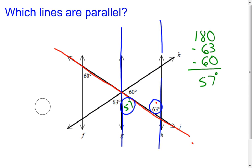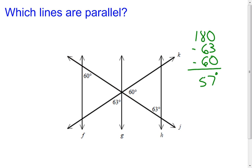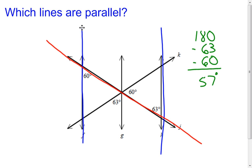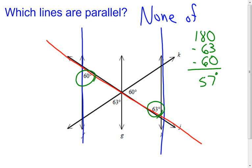I'm 0 for 2, so I check the last pair: line f and line h. Picking a transversal and looking at the alternate interior angles at those intersections, those two angles are also not congruent. Therefore line f and line h are not parallel either. So none of the lines are parallel — and sometimes that happens. You have to check all the different combinations of two lines to see which ones, if any, are parallel.